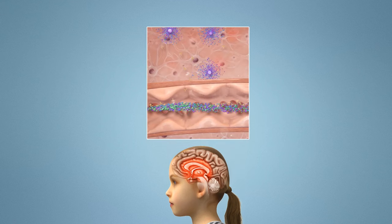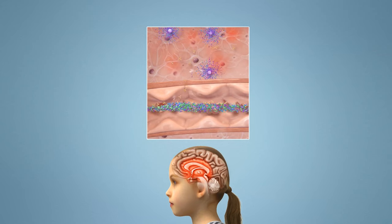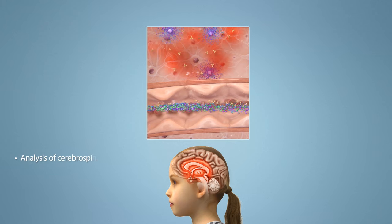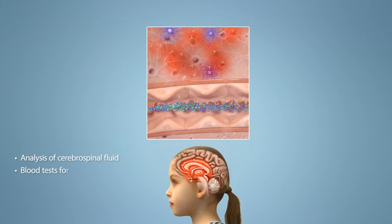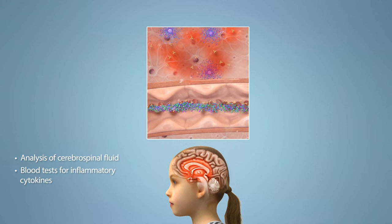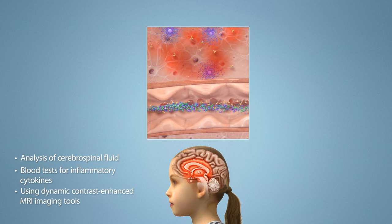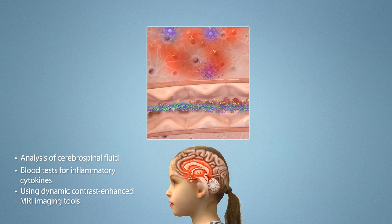In order to improve the diagnosis of these CNS disorders, it is imperative to develop biomarkers that can be used to test for the disease. These tests can range from analysis of cerebrospinal fluid, blood tests for inflammatory cytokines, and using dynamic contrast-enhanced MRI imaging tools to detect BBB breakdown during flare-ups of the disease.